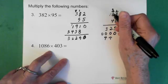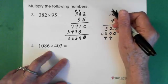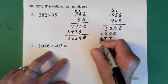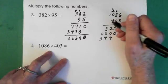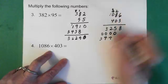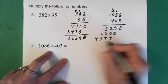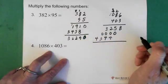4 times 0 is 0. And we add the 3. And that gives us 3. 4 times 1 is 4. So the 4 goes here.